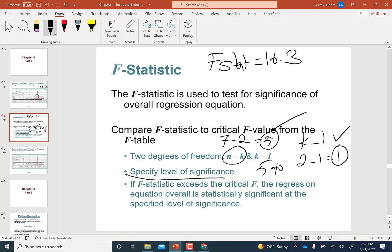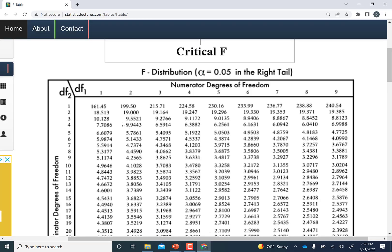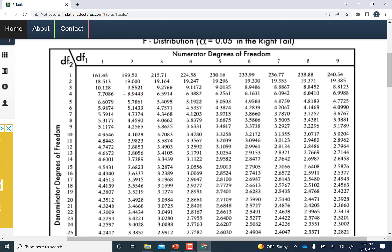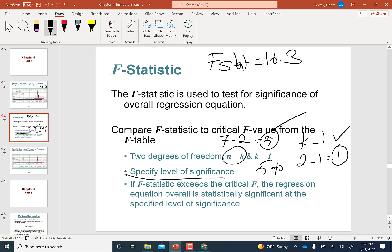Let's pick 5 percent level of significance from the table I pulled up online. Numerator degrees of freedom was one, denominator was five. F critical value is 6.6 at five percent level.